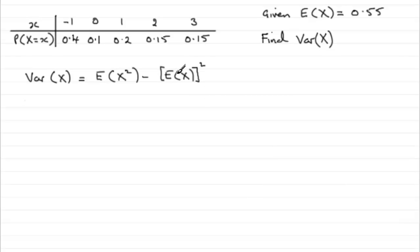Now we've got E of x, 0.55, so that's easy, we can square that, but we haven't got E of x squared. So what is E of x squared? Well, you should remember that E of x squared is equal to the sum, sigma, of our observed value squared multiplied by the corresponding probabilities.